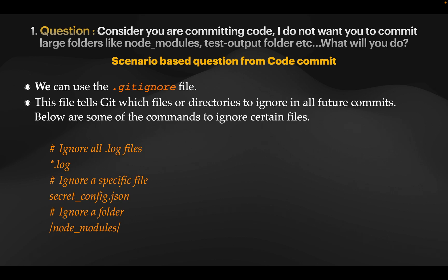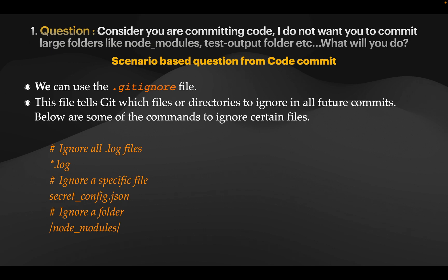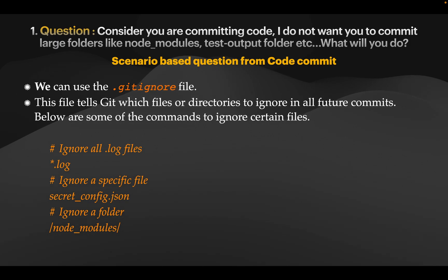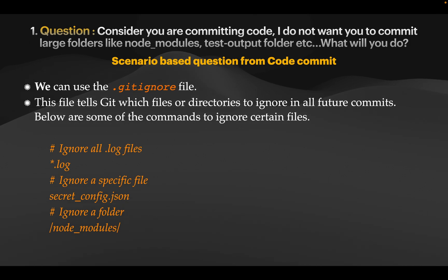The purpose of the .gitignore file is that if we do not want any files or directories to be ignored in all your code commits, we can add the file names in this .gitignore file. For example, asterisk dot log will ignore all log files. If you want to ignore specific folders, use forward slash, folder name, and forward slash.